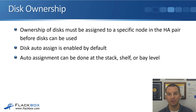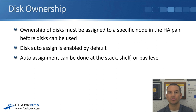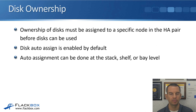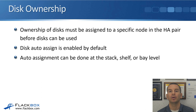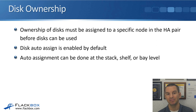Ownership of disks must be assigned to a specific node in the HA pair before disks can be used. Disk auto-assign is enabled by default, so normally whenever you put a new disk into the system — everything is hot-swappable — it will be automatically assigned to one of the nodes. That auto-assignment can be done at the stack, the shelf, or the bay level.